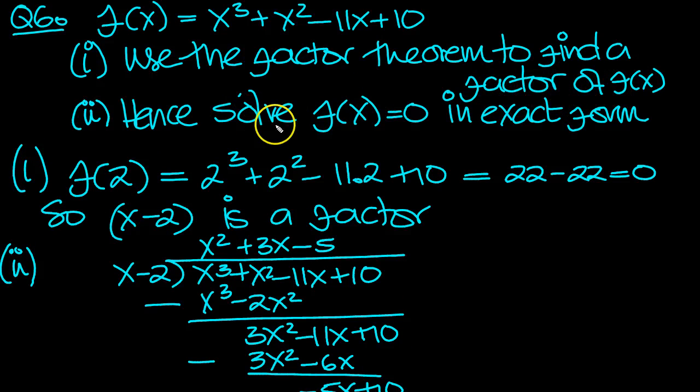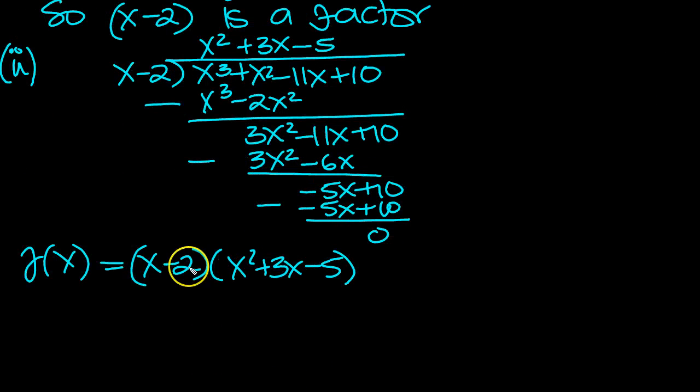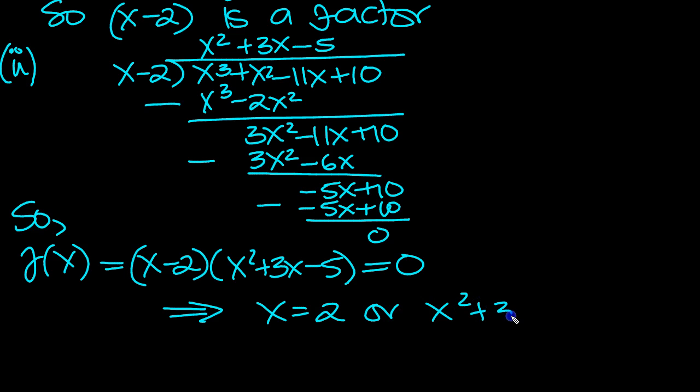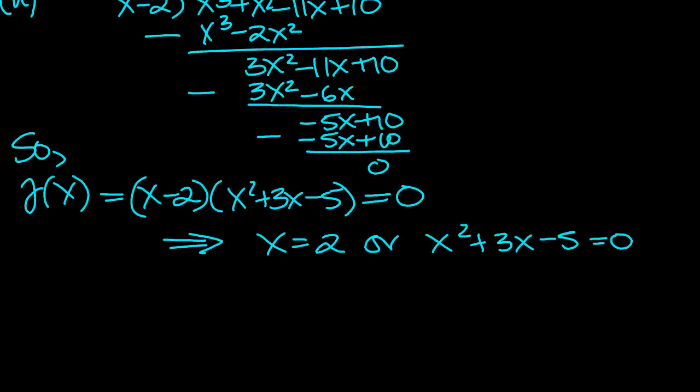So let's have a little look at the question. Use the factor theorem to find a factor, hence solve this in exact form. So here f of x, so f of x equals 0 then, that implies x equals 2, or x squared plus 3x minus 5 equals 0. This doesn't factorize, I don't think, looking at it there.